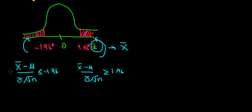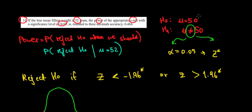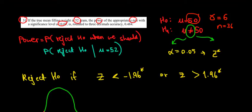We're looking for which sample mean causes us to reject the null hypothesis. Under the null hypothesis we were testing, the population mean is equal to 50 grams. From the previous question, the standard deviation sigma was 6 and the sample size n was 36 — let's keep those in mind.